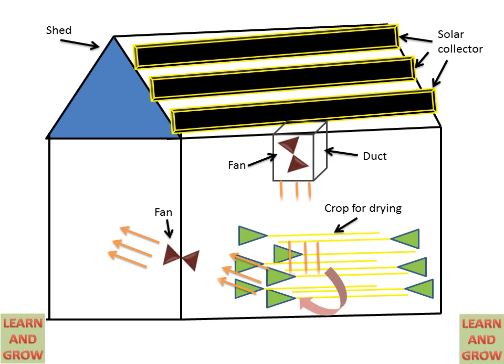This process will continue, and at the required temperature, the crop will dry. This is the process of crop drying with the help of solar collectors.